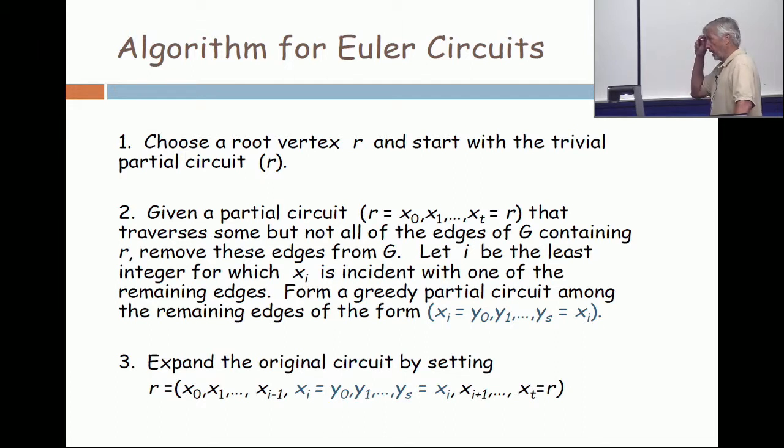Given a partial circuit of the form R equals X naught X1 up to some XT, and again, that ends at R, that traverses some but not all of the edges of G containing R. Remove those edges from the graph. Let I be the least integer for which there's some vertex XI in your sequence which is incident with one or more of the remaining edges. Form a greedy partial circuit among the remaining edges that starts and ends with the vertex XI. Then expand the original circuit by opening it up at the point XI and replacing XI by the sequence that starts and ends with XI.